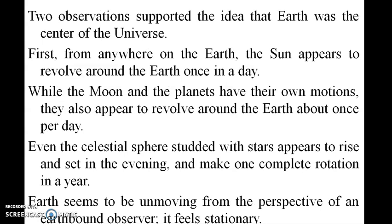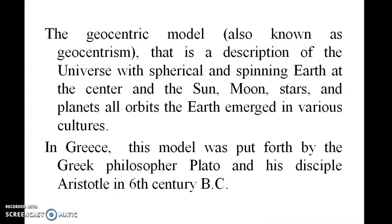Two observations have supported the idea that the Earth was the center of the universe. First, from any point on the Earth, the sun appears to revolve around the Earth once a day. While the moon and planets have their own motion, they also appear to revolve around the Earth once per day. Even the celestial spheres with the stars appear to rise, set in the evening, and make one complete rotation around the Earth. The Earth seems to be unmoving from the perspective of an Earth-bound observer. This is also known as geocentrism — a description of the universe with a spherical, spinning Earth at the center, and the sun, stars, moon, and planets all orbiting the Earth — a model that emerged in various cultures.